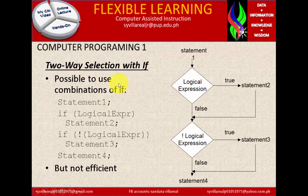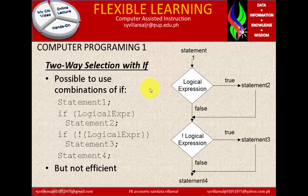Two-way selection with if. It is possible to use combinations of if statement 1, if logical expression, then statement 2, then another if logical expression, then statement 3, and it will go to statement 4. The reason of this is considered to be if you want to make it more accurate in terms of the decision making. But it should be identified right here, but not efficient. Not efficient in the terms of redundancy.